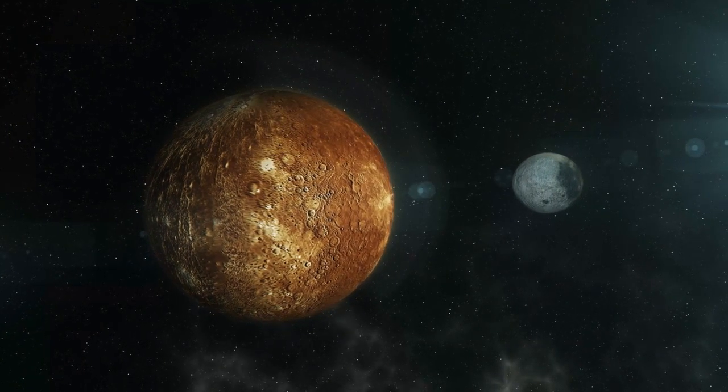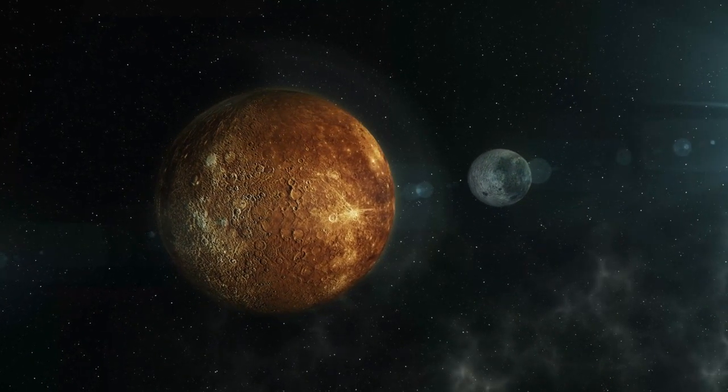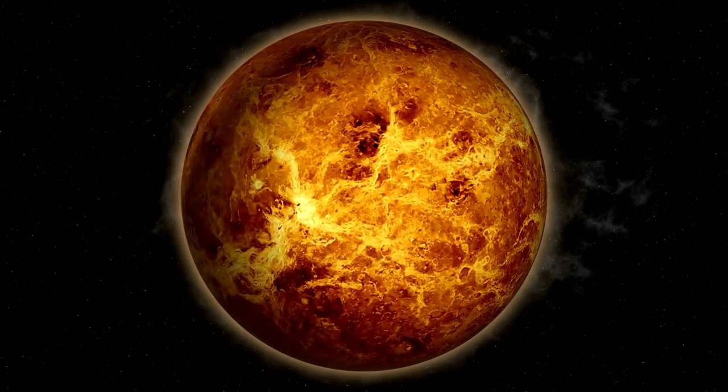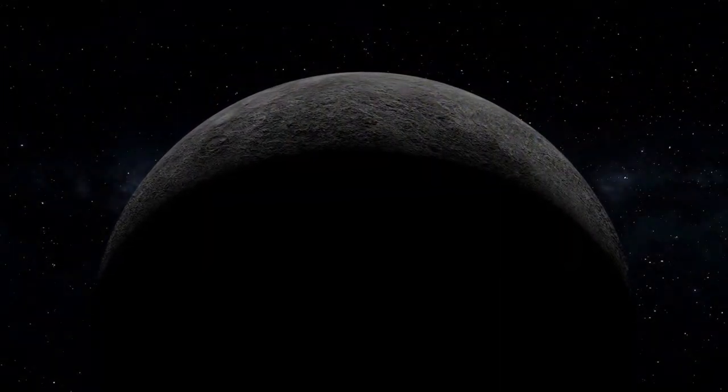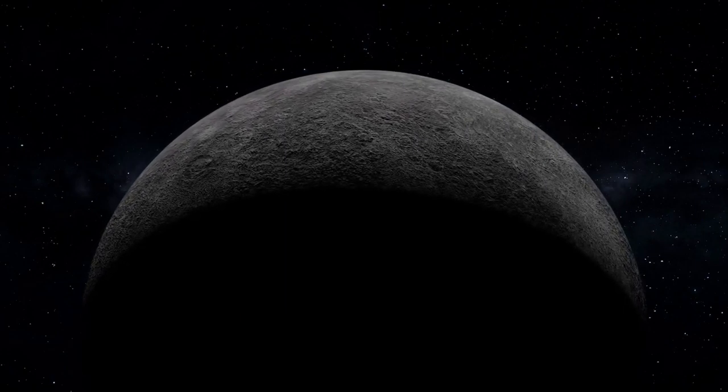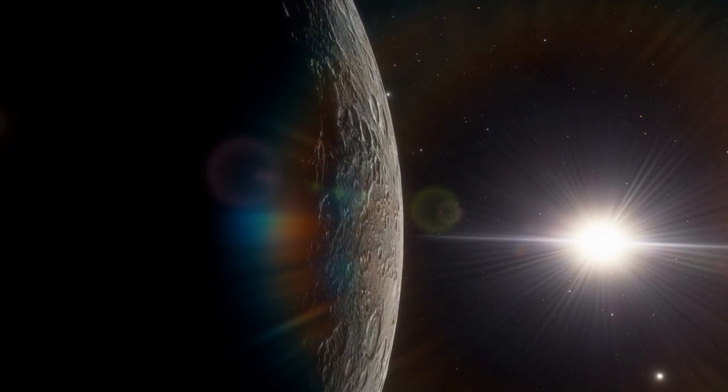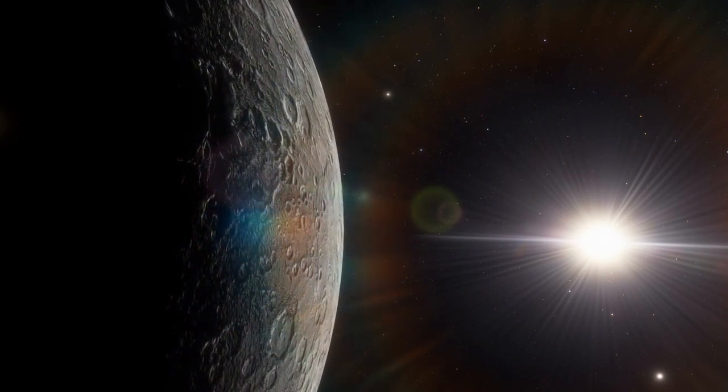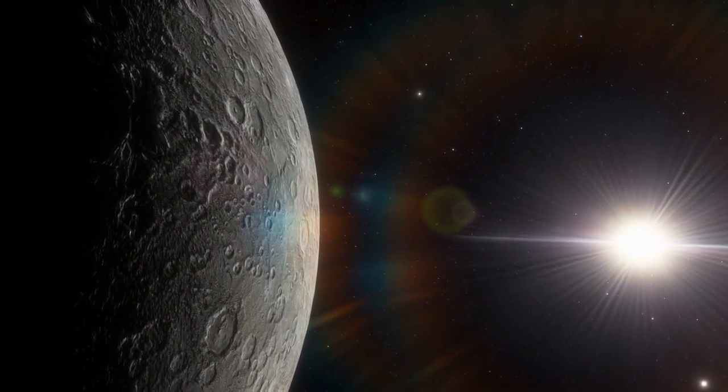Although Mercury is the closest planet to the Sun, it is not the hottest planet in the solar system. That title goes to Venus, due to its thick atmosphere and greenhouse effect. Mercury has the longest day of any planet in the solar system, lasting 176 Earth days. Because of its proximity to the Sun, Mercury's surface experiences extreme temperature variations, with temperatures ranging from minus 290 degrees Fahrenheit at night to 800 degrees Fahrenheit during the day.